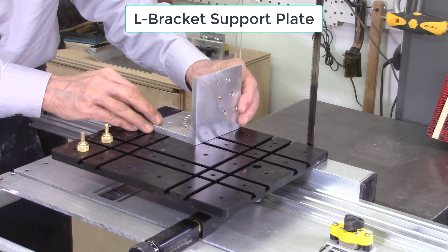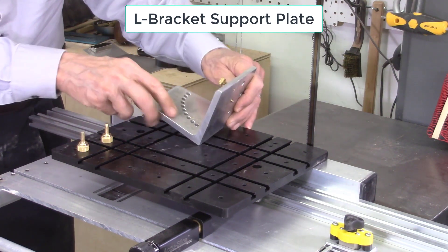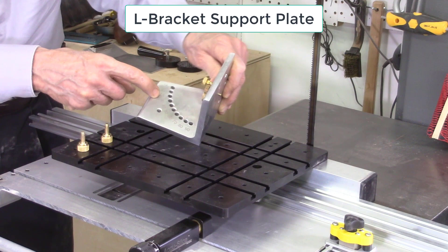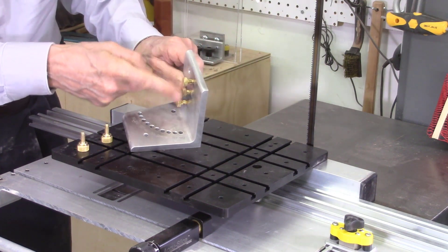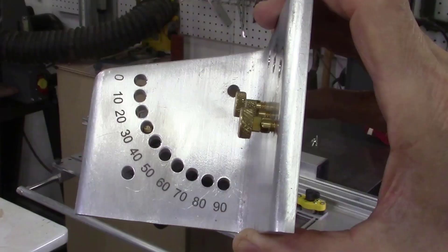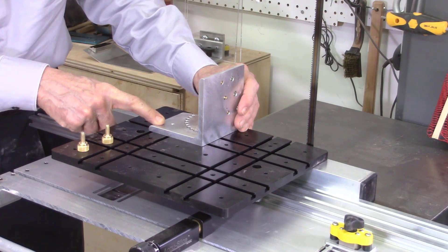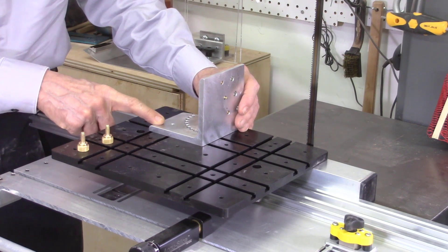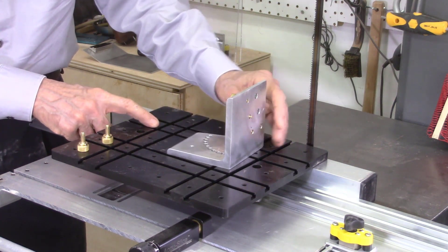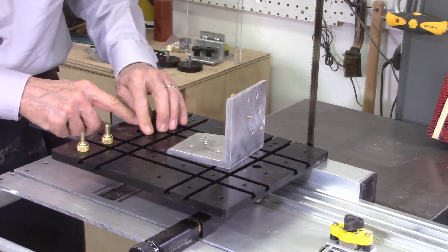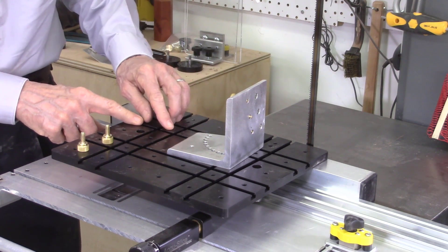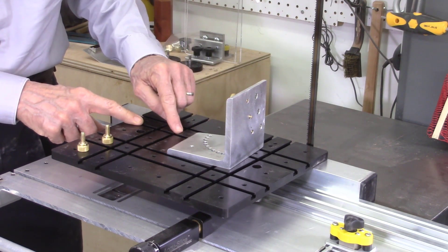The heart of the system is this L-bracket support plate which contains the angle indexing positions marked on the base of the bracket, plus three sets of mounting holes for the pattern disc. The indexing positions are marked from 0 to 90 degrees at 10-degree intervals. Using these indexed positions you can actually cut angles from 0 to 120 degrees. The L-bracket support plate mounts onto the AccuSled using any two of the quarter by 20 inch tapped holes, which are all spaced two inches apart.